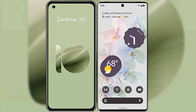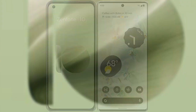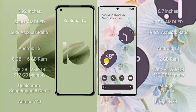I will compare the new Asus Zenfone 10 with Google Pixel 6 Pro. Asus Zenfone 10 comes with a 5.92-inch Super AMOLED display. Google Pixel 6 Pro comes with a 6.7-inch LTPO AMOLED display.